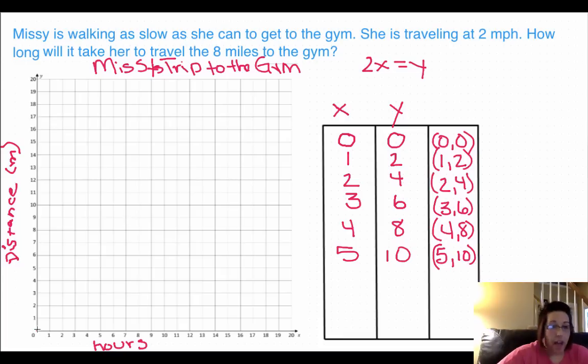So after zero hours, she's traveled zero miles. One hour, she's traveled two miles. Two hours, she's traveled four miles. Three hours, she's traveled six. Four hours, she's traveled eight. Five hours, she's traveled ten. So if we go ahead and draw our line here.